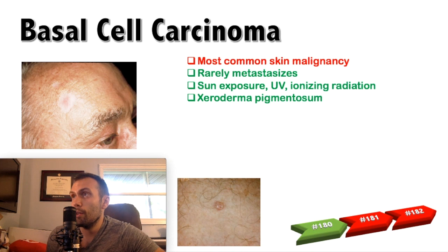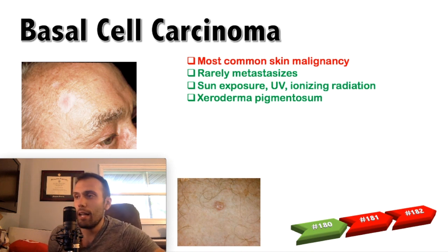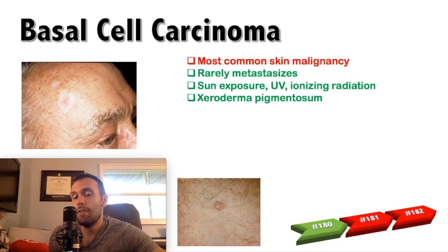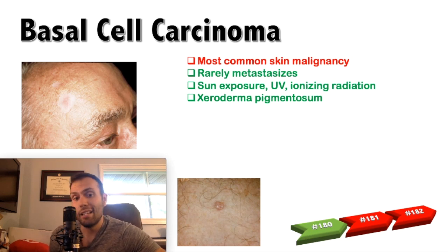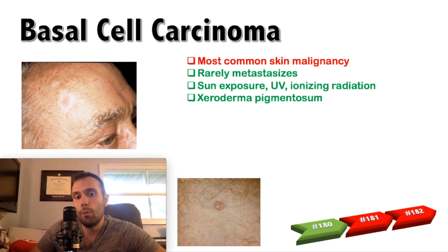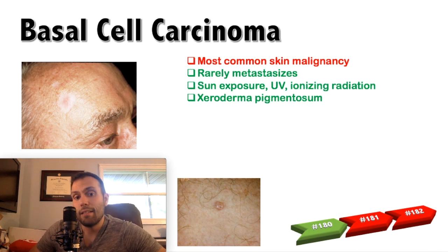Basal cell carcinoma is the most common skin malignancy — that's particularly high yield. When talking about basal cell carcinoma, we'll be comparing a lot of facts with squamous cell carcinoma and melanoma. It's important to remember it's the most common skin malignancy and it very rarely metastasizes. This is something it has in common with squamous cell carcinoma, but even more so for basal cell carcinoma — it's extremely rare that it would end up metastasizing.